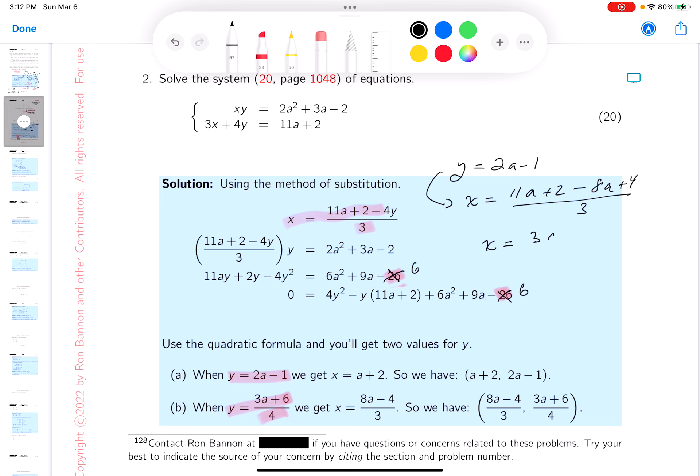So let me plug this in. So I'm going to say, y is 2a minus 1. This would give me x equals 11a plus 2 minus 4 times y, which is minus 8a plus 4 over 3. Let's keep doing it. You get 11a minus 8a, which is going to be 3a. 2 plus 4, which is 6, over 3, which would give me a plus 2. Let me point out where that is right here. I got this ordered pair. What's the ordered pair? x is a plus 2. The y is 2a minus 1. That's done.